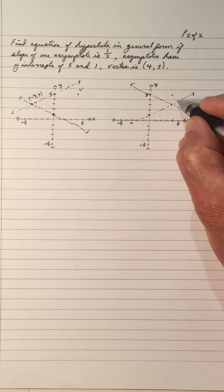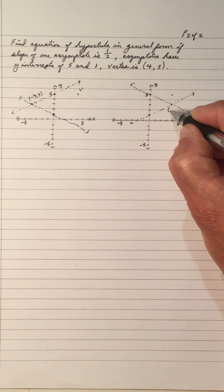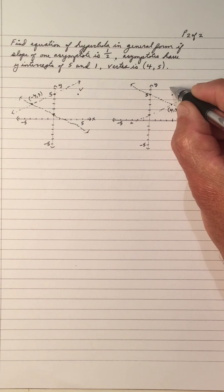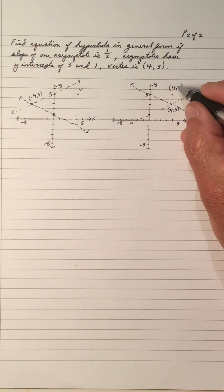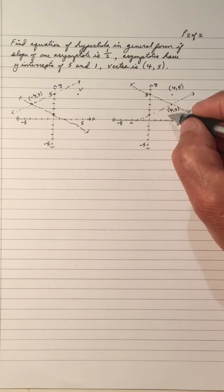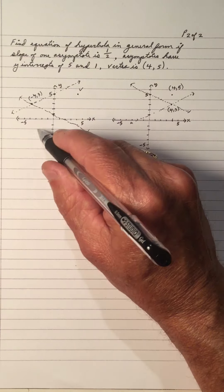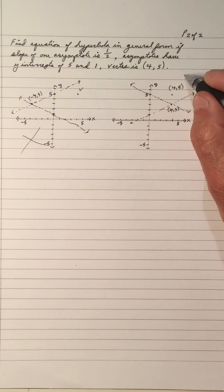And they both intersect at this point here, which is the point (4, 3). And notice now that the vertex is (4, 5). So notice the x coordinates are the same here, and the y's are up and down. So this looks like the right one. This is not correct, so we can't have this one. So this is the correct one right here.